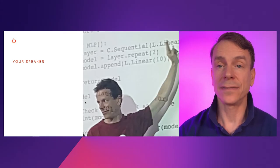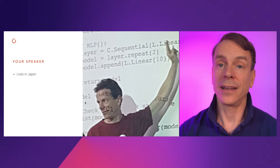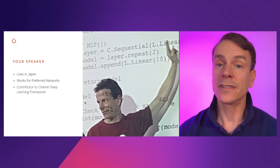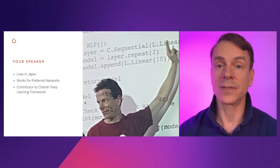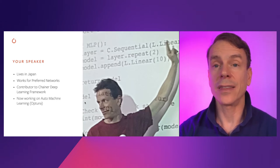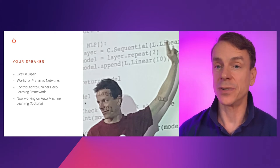A little bit more about myself. I live in Japan and work for Preferred Networks, one of the premier industrial deep learning companies in Japan. Previously I worked on the Chainer team within Preferred Networks, which is one of the precursors of PyTorch and helped define the define-by-run algorithm. Although now I'm on the auto machine learning team, specifically working on the Optuna team.